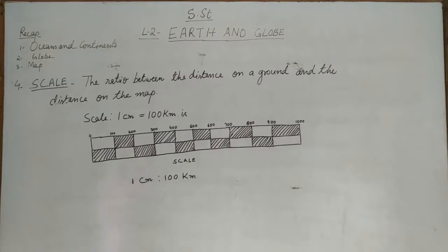Number one is ocean and continents. What are oceans? Very large water bodies are called oceans. And continents - very large land masses are called continents. Next is globe - globe is the miniature model of the earth. Number three is map - map is a flat representation of the earth.